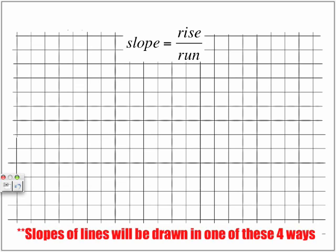Slope, as we said, is equal to rise over run. Slopes of lines will be drawn in one of these four ways.